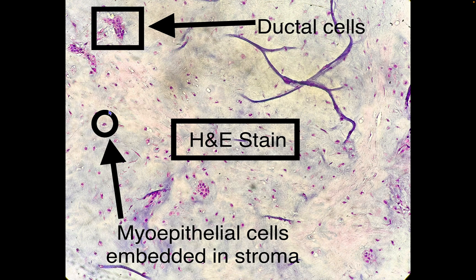To recap, pleomorphic adenoma has a triphasic pattern: epithelial cells, myoepithelial cells, and stroma. Molecularly, pleomorphic adenomas have a chromosome 8 PLAG1 fusion or chromosome 12 HMGA2 fusion. They are the number one most common salivary gland neoplasm and are benign. However, 5% of pleomorphic adenomas can become carcinoma ex pleomorphic adenoma, meaning the pleomorphic adenoma transforms into a high-grade carcinoma — including salivary duct carcinoma, high-grade mucoepidermoid carcinoma, or myoepithelial carcinoma.